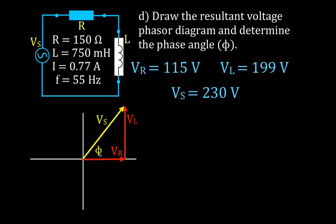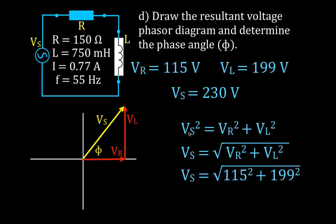Before calculating angle phi, I want to confirm the source voltage. We have a right triangle — the voltage triangle — and I can use the Pythagorean theorem to calculate the hypotenuse. Taking the square root of 115 squared plus 199 squared gives us 230 volts again, which matches what we calculated earlier. That confirms these voltages are correct and that the current used to calculate them is also correct.